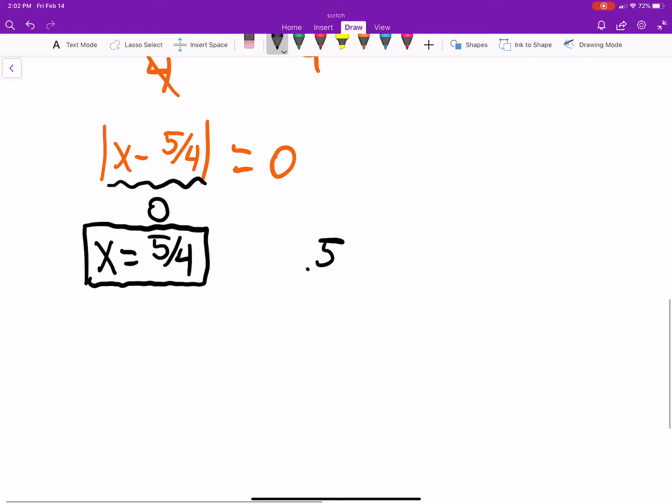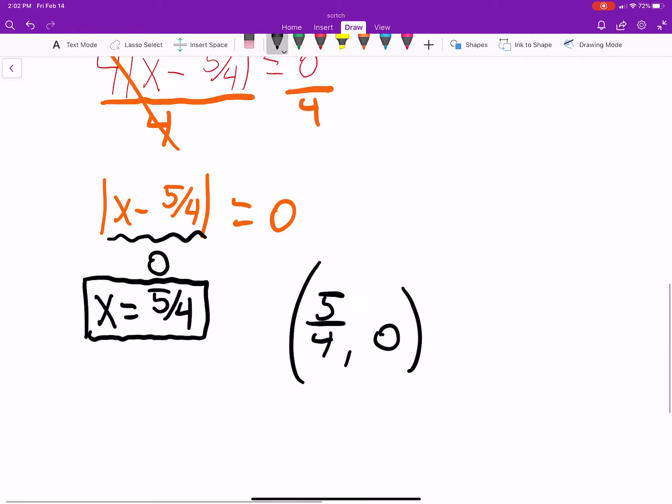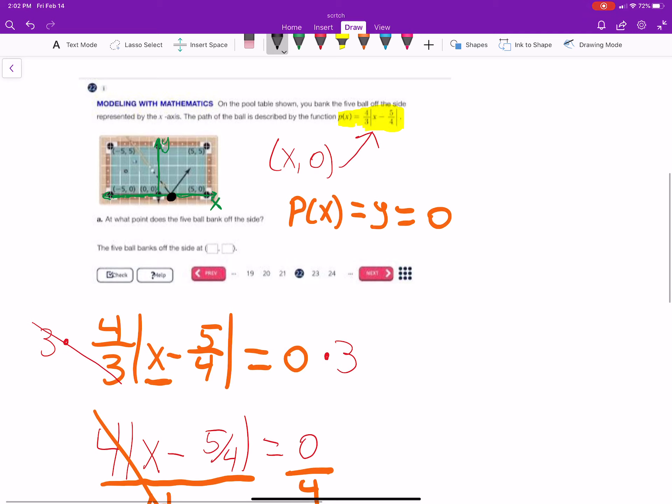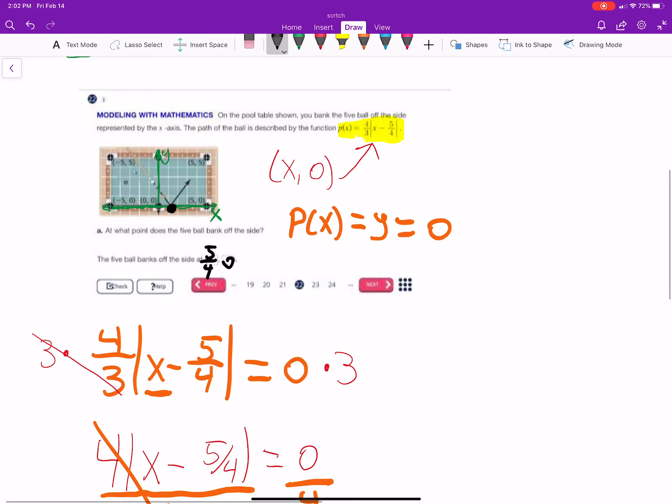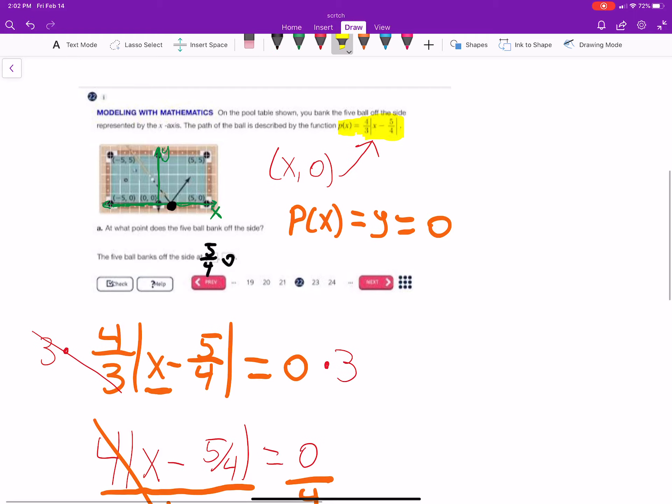So, 5-fourths comma 0 is this point right here. Now, the next question, and I don't have it here, but it's below that, is does it go into the pocket here? This pocket that I'm highlighting yellow? Do we actually make it?